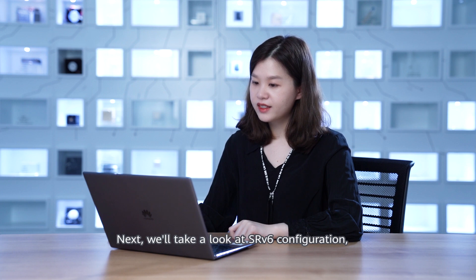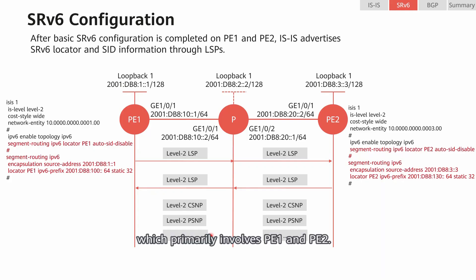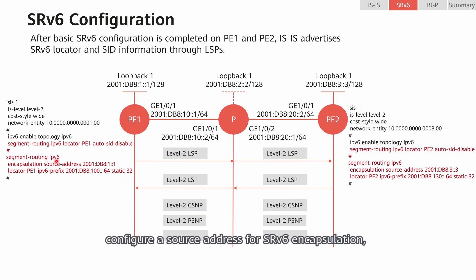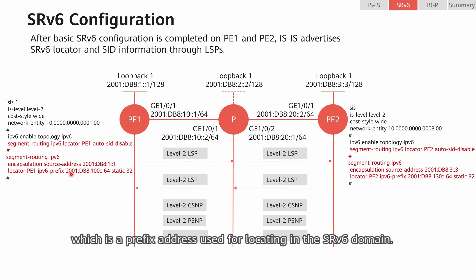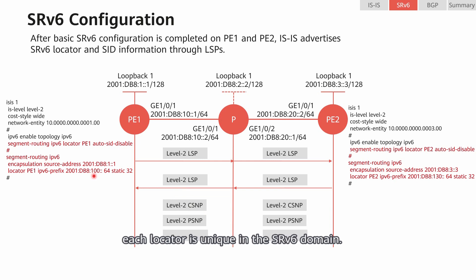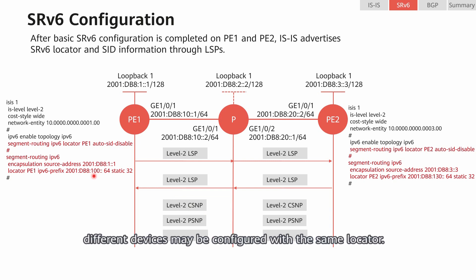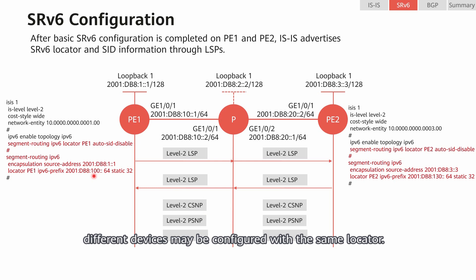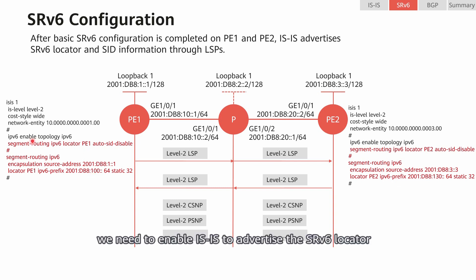Next, we'll take a look at SRV6 configuration, which primarily involves P1 and P2. We should enable SRV6 globally, configure a source address for SRV6 encapsulation, and then configure a locator, which is a prefix address used for locating in the SRV6 domain. As such, you are typically advised to ensure that each locator is unique in the SRV6 domain. Nevertheless, in some scenarios, such as multi-node protection, different devices may be configured with the same locator. After configuring SRV6, we need to enable IS-IS to advertise the SRV6 locator through the segment routing IPv6 locator command.